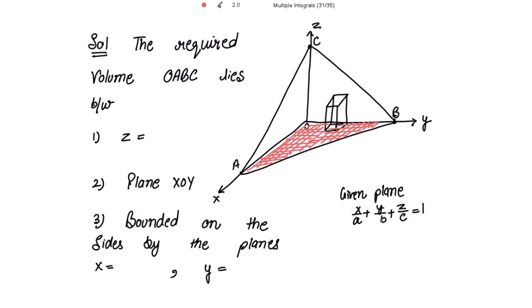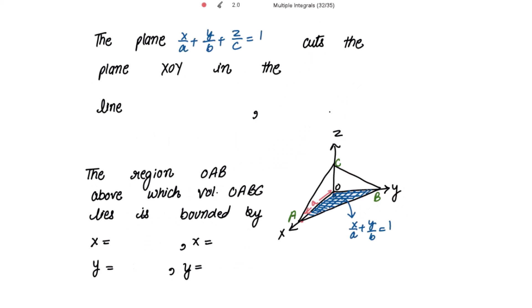For this plane, we write z = c(1 - x/a - y/b). This volume also lies between the given plane and the XOY plane, and it is bounded on the sides by the planes x = 0 and y = 0. The given plane cuts the XOY plane in the line x/a + y/b = 1.